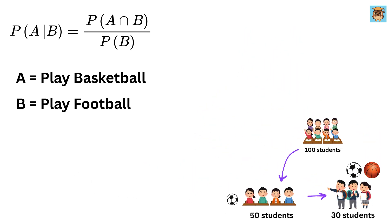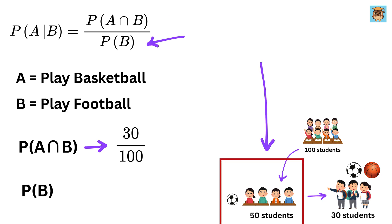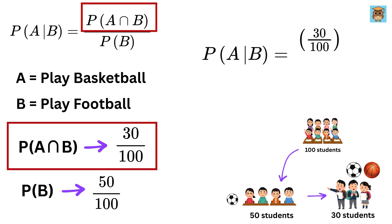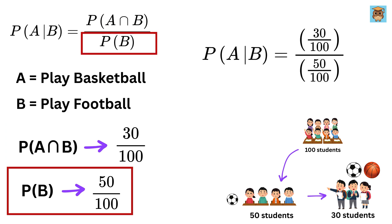So the probability of both events A and B happening together, that is a student who plays both basketball and football, or P of A intersection B, is 30 out of 100. That's the overlapping part in the Venn diagram. Now the probability of just event B, that is a student playing football, is 50 out of 100. So the conditional probability of A given B is simply the probability of both A and B divided by the probability of B. That's 30 divided by 100 divided by 50 over 100, which gives us the same 3 out of 5, or 60 percent. This is how the formula works behind the scenes.